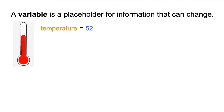Today the temperature might be 52. Tomorrow it might be 78 degrees. And another day it might be 100 degrees. But it is never the same temperature every single day — it's always changing. So temperature is a variable.